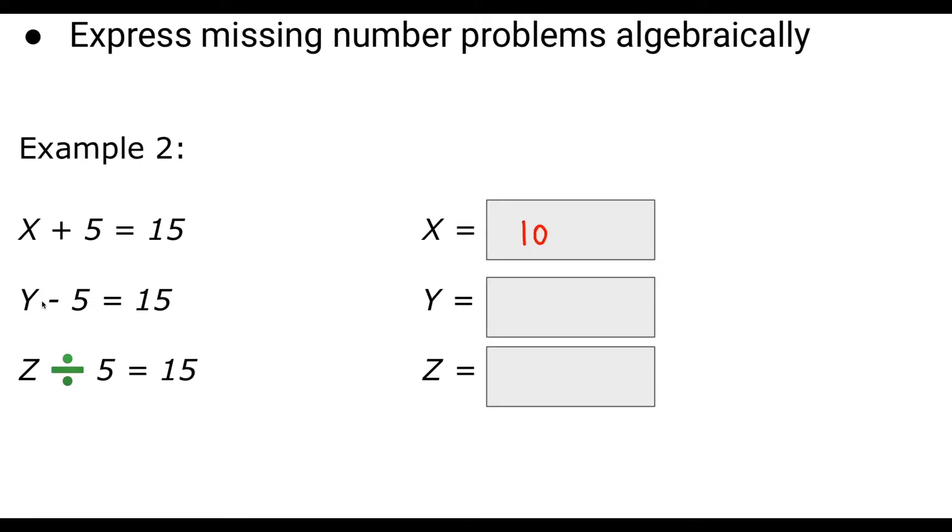Similarly with y, y subtract five equals 15. So if I add five onto 15, we'll get 20. So if y is 20, 20 subtract five equals 15. That's right, so y must be 20.